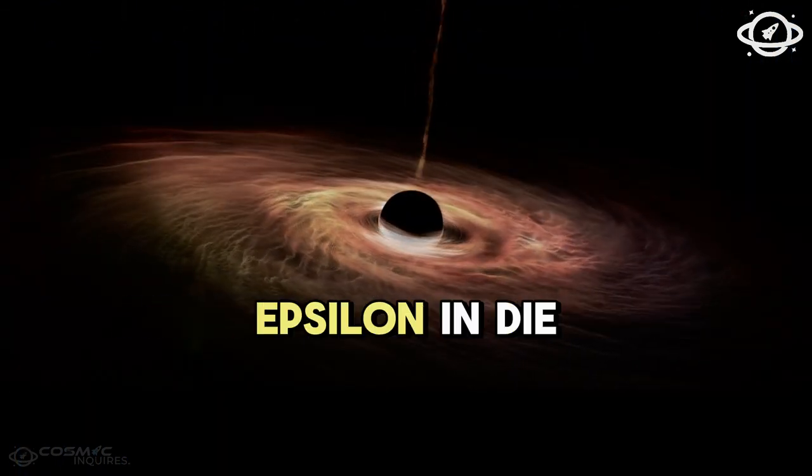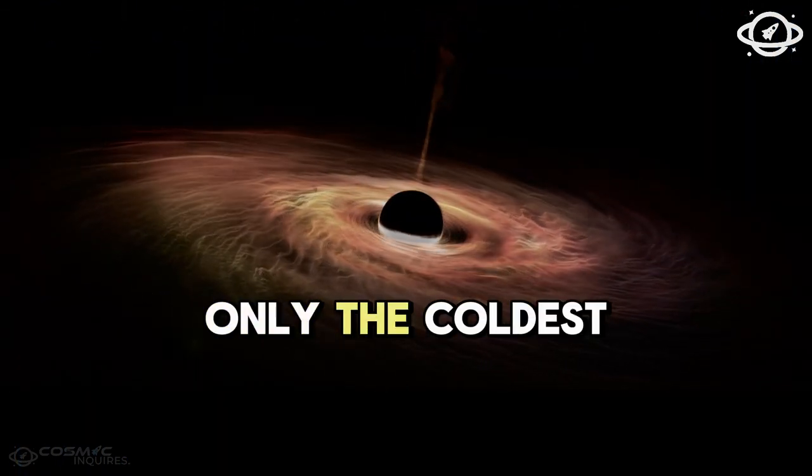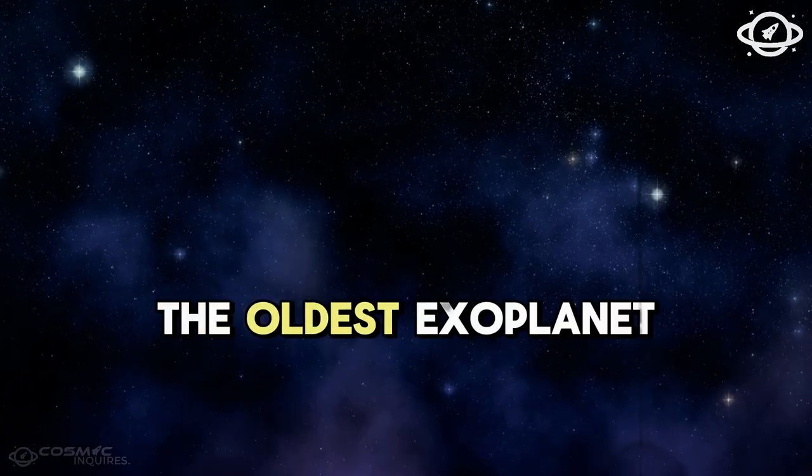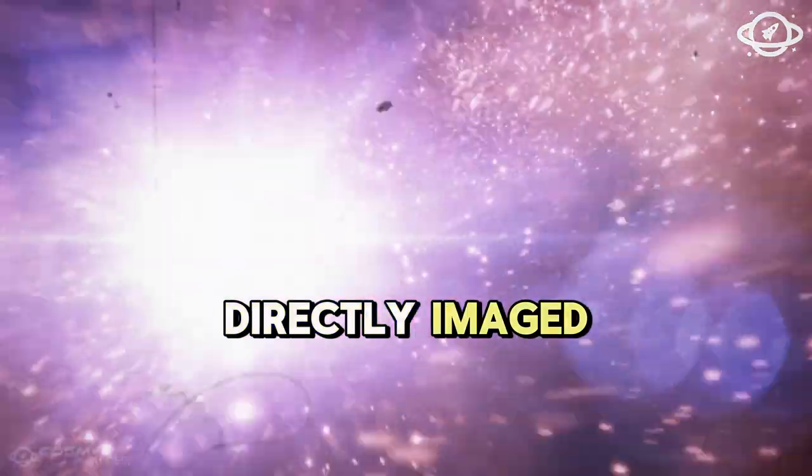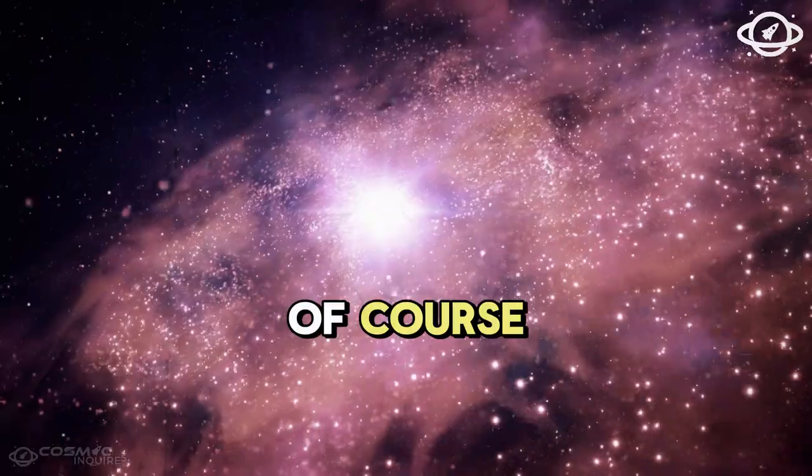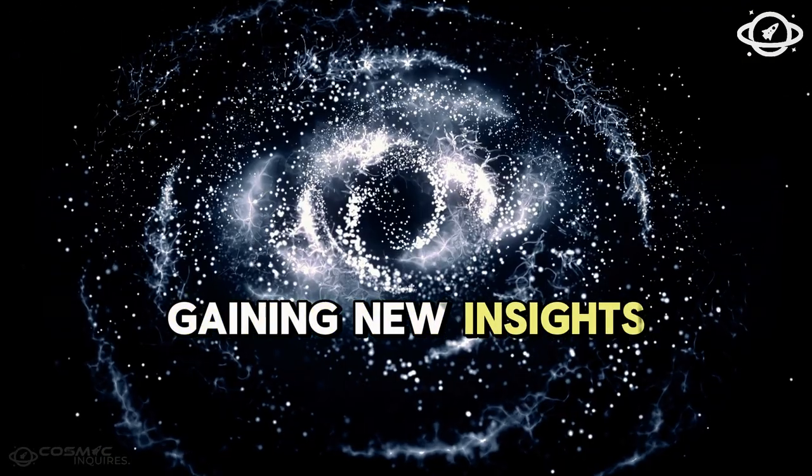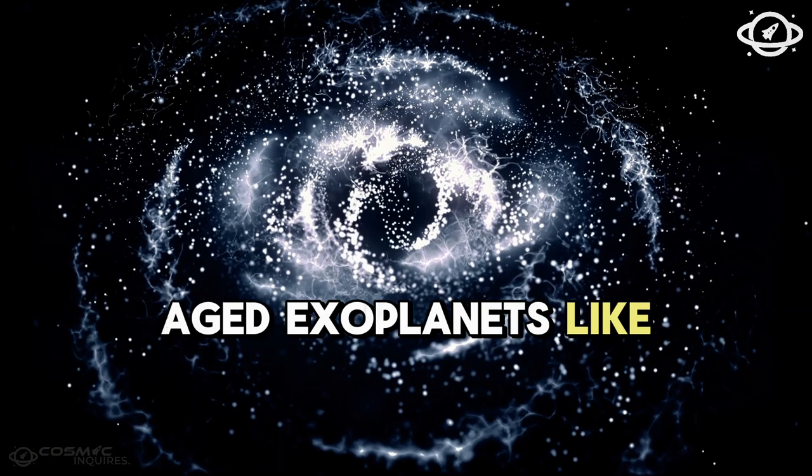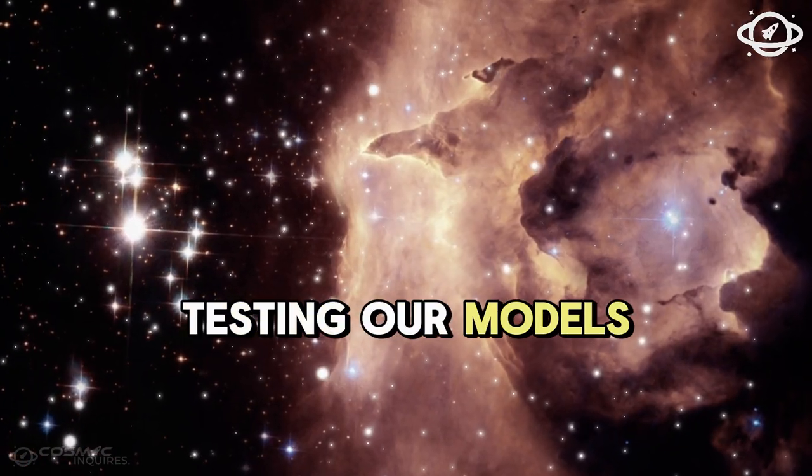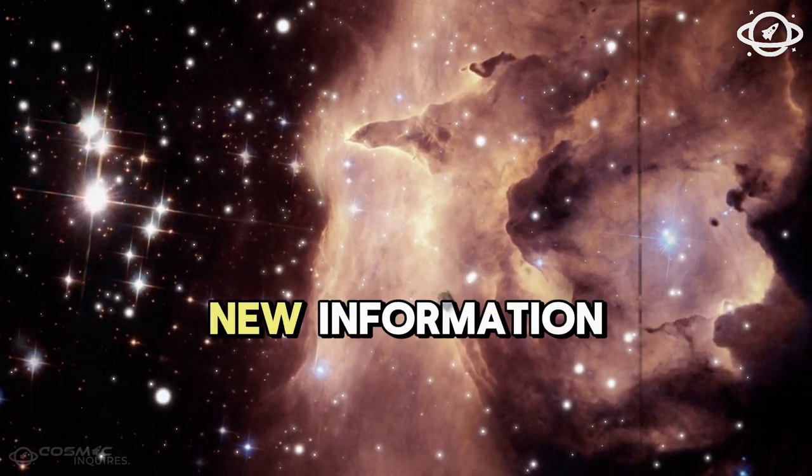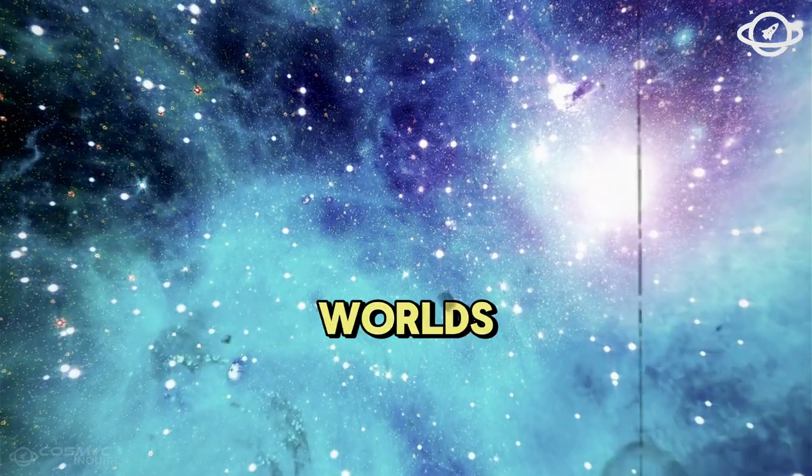Against this background, Epsilon Indi AB is not only the coldest but also by far the oldest exoplanet that has been directly imaged to date. The corresponding images are, of course, not only beautiful to look at but also hold huge potential for gaining new insights. Aged exoplanets like this one are ideal for testing our models of planetary development and gathering new information about the later stages of extrasolar worlds.